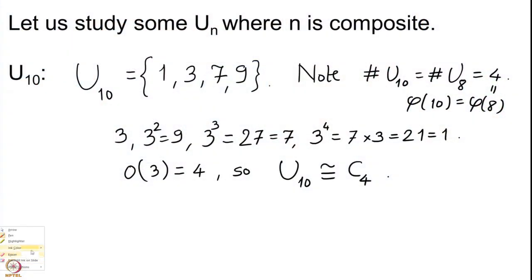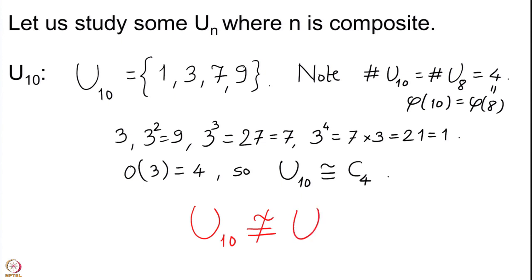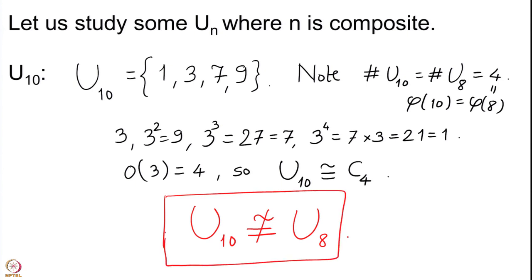As a corollary, U(10) is not isomorphic to U(8). This is why we study the group structure on these sets. If we were looking only at the orders of these sets, we would conclude U(10) and U(8) have the same number of elements. However, as groups these two are distinct.